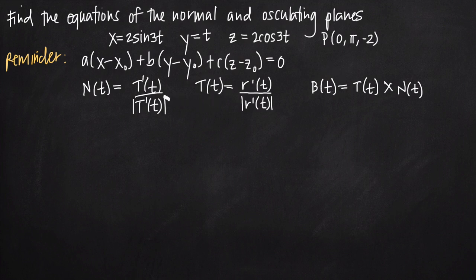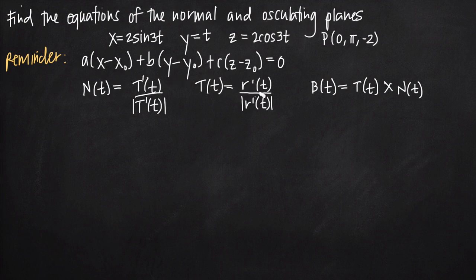So we're really working backwards here. We have formulas for the normal vector, the tangent vector, and the binormal vector B. We want to start with the unit tangent vector because we'll need T(t) to plug into the unit normal vector formula, which requires T′(t). To use that formula, we need r(t) so we can take its derivative and find r′(t), which we get from our given parametric equations.